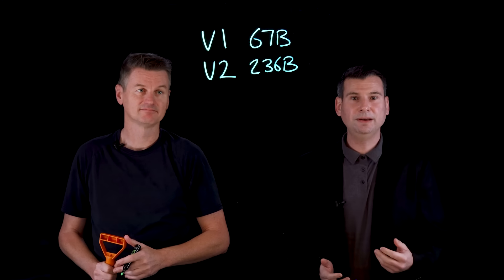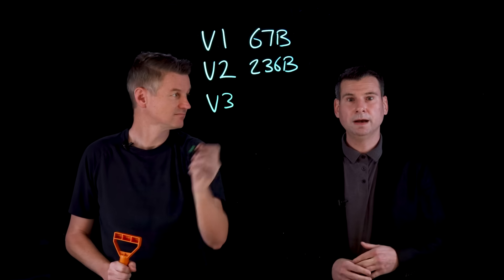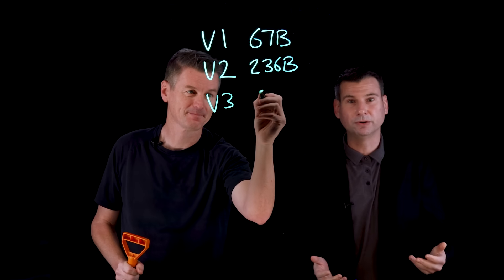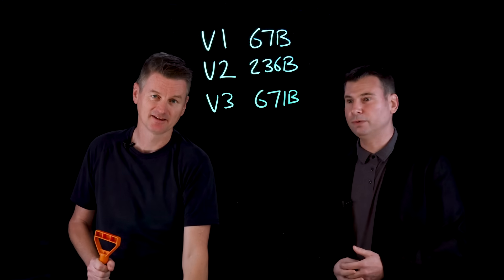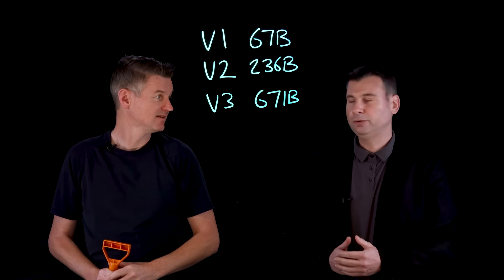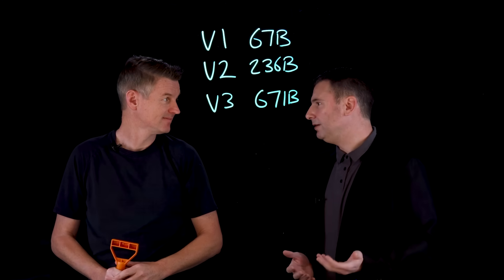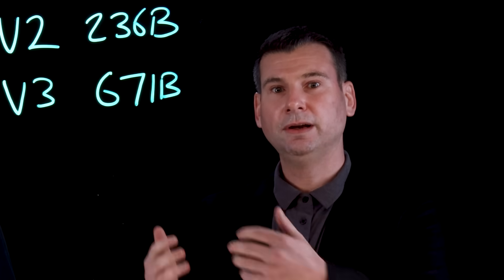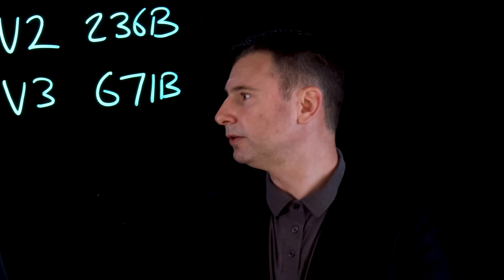And it set us up for success for the DeepSeek version 3, which was released December of 2024. Now this one is even bigger. It's 671 billion parameters. But this is where we began to see the introduction of using reinforcement learning with that model. And some other contributions that this model had is it was able to balance load across many GPUs because they use a lot of H800s within their infrastructure. And that was also built around on top of DeepSeek V2. So all these models accumulate and build on top of each other.